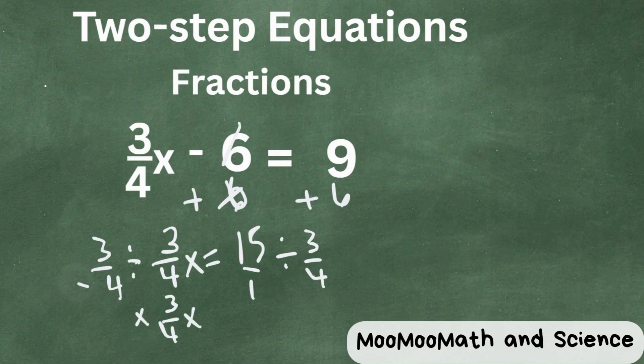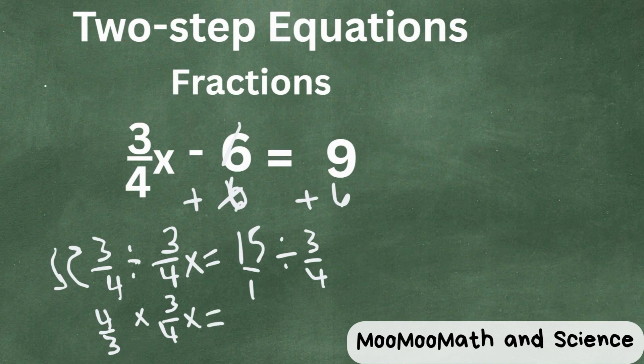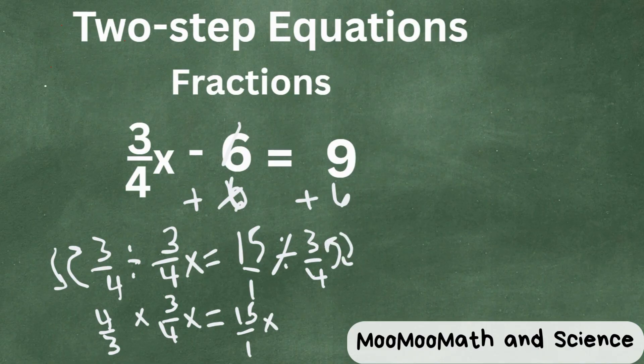We're going to change the division to multiplication, and then we're going to flip this fraction and basically create the reciprocal. So here we go, and let's do the same to the other side. We're going to change this to multiplication, and we're going to flip this fraction. So basically what you're doing is you're multiplying it by its reciprocal.